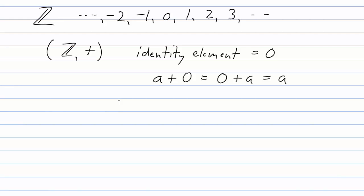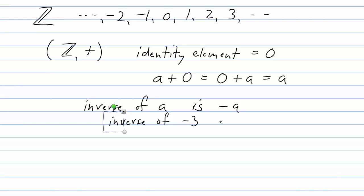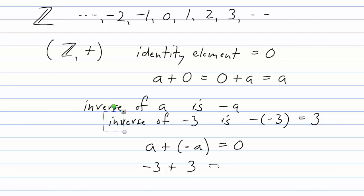Every element has an inverse, which is just its negative. The inverse of a is negative a. For example, the inverse of negative 3 is negative negative 3 — the two negatives cancel and we get 3. Remember what inverse means: if you take a and add to it negative a, you get the identity 0. So negative 3 plus its inverse 3 equals 0.